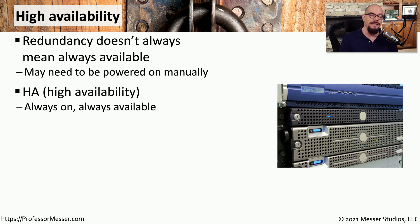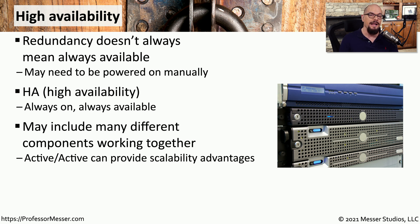But some redundancy is immediately available. In the case of high availability, you may be able to have devices that are always on and always available. And if the primary system fails, you have immediate accessibility and can maintain the uptime and availability of that application. This also means that you might have multiple components working together — multiple firewalls that interact with multiple routers, which are then connected to multiple switches. And if any one of those happens to fail, your system still remains up and running using this high availability.